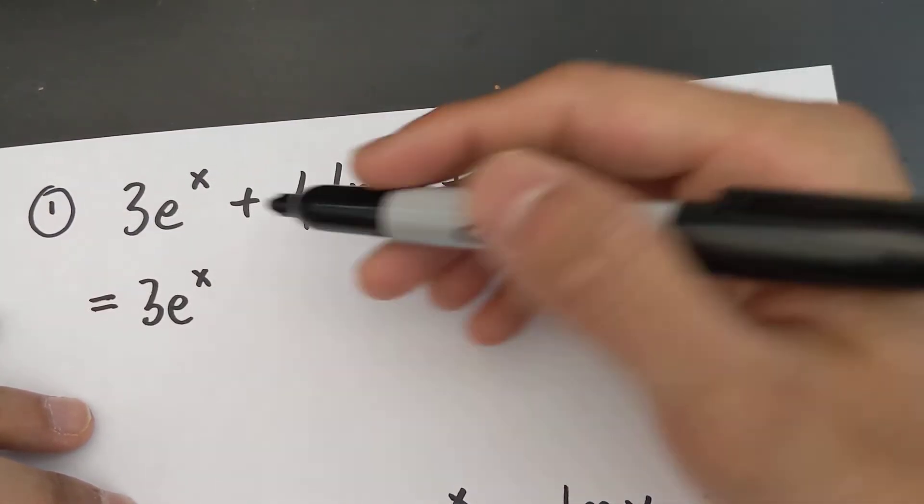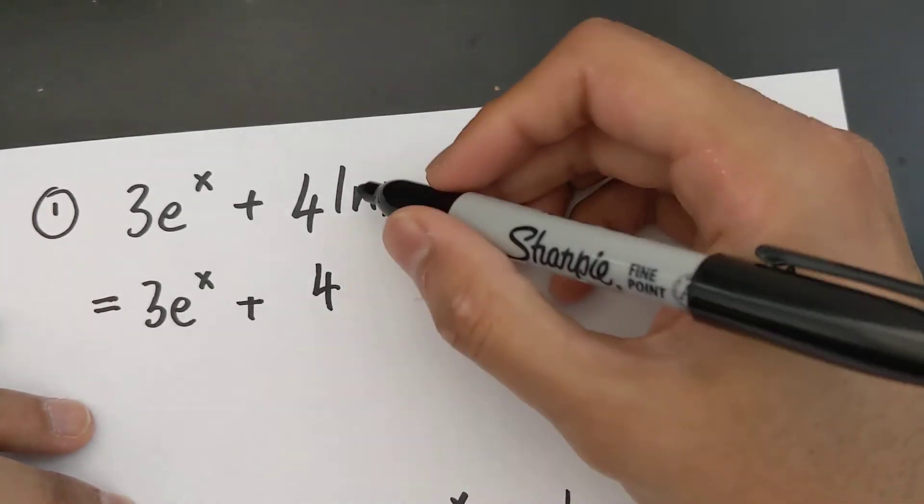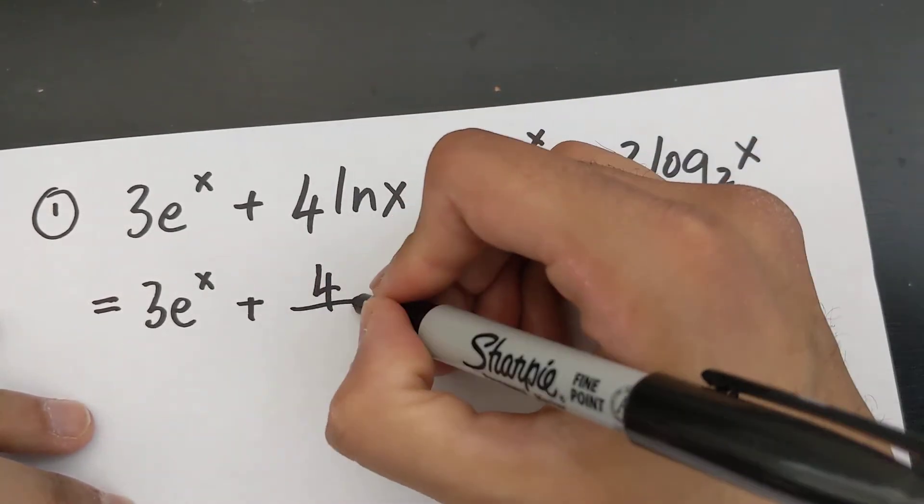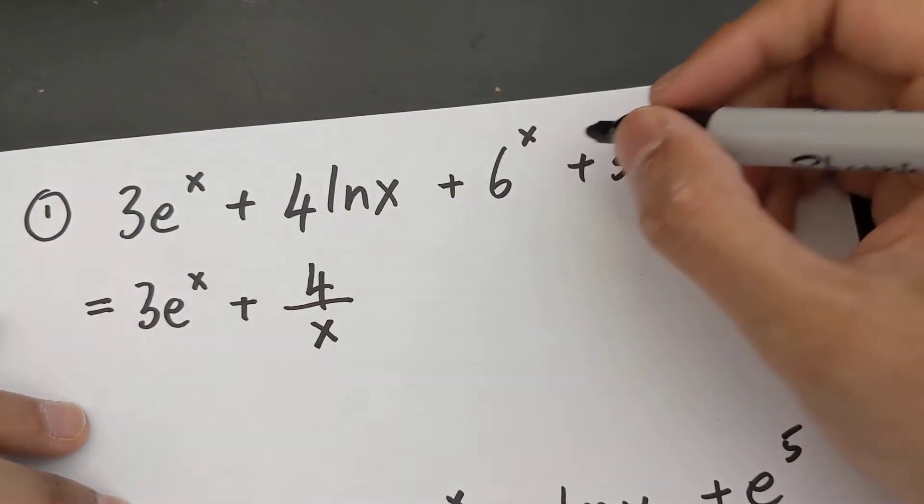Now the derivative of ln x is 1 over x. So if I derive this over here, the 4 stays on the top, the ln x turns into 1 over x, so the bottom is just gonna be x. That's 4 over x.